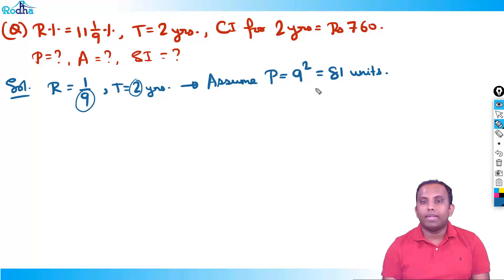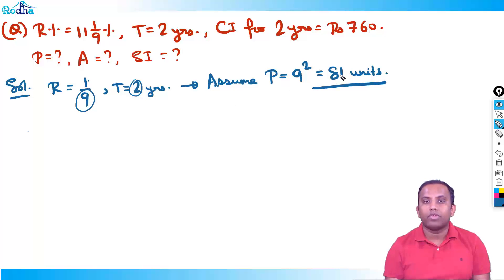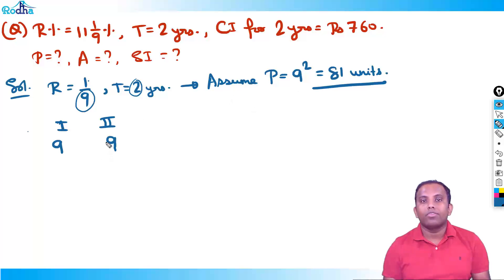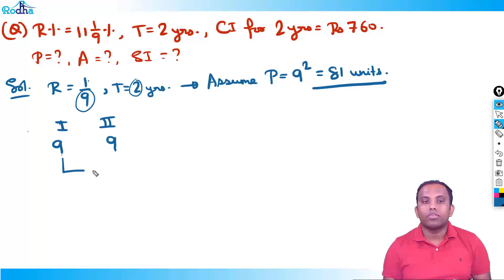Since principle is 81 units, interest for the first year is 1/9 of 81 = 9. Interest for the second year is also 9. This is obviously SI. For CI: in the second year, interest on the first year's interest is charged. First year's interest is 9 rupees, so again 1/9 of 9 = 1 rupee. So CI for the second year is 9 + 1 = 10 units total.